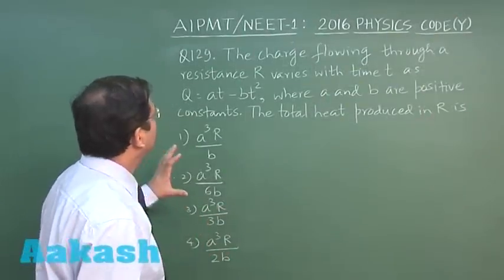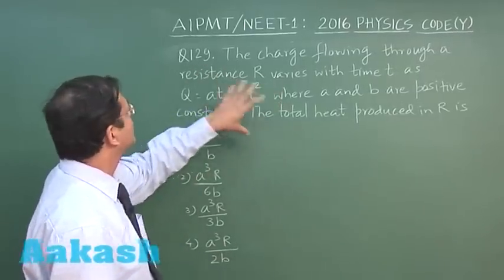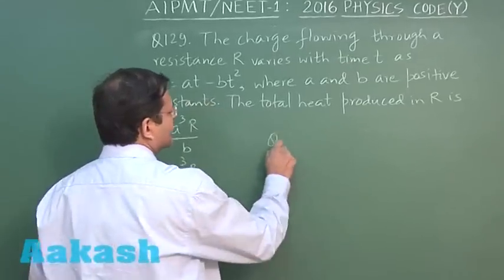In question 129, you have been given charge as a function of time. The charge flowing through a resistance R varies with time t as q equals at minus bt squared.